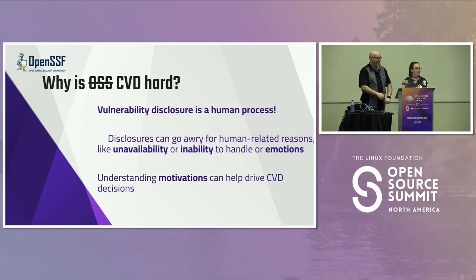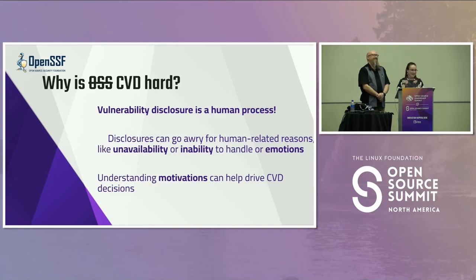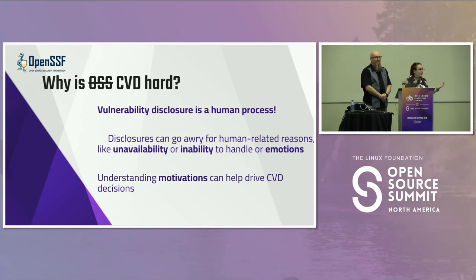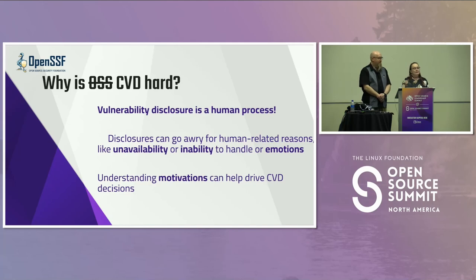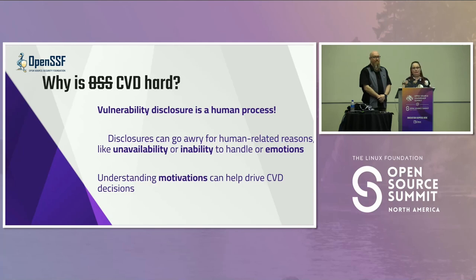I want to talk more generally about why coordinated vulnerability disclosure is difficult even beyond open source. I am a huge advocate of reminding folks that behind all the technology we interact with is a human being. Vulnerability disclosure is truly a human process — a person talking to another person. Disclosures can go awry for lots of human-related reasons like unavailability, inability, emotions, thoughts, and feelings. It's very important to remember the motivations of all parties involved and give people a little grace. Everyone typically involved in a CVD process is doing so for good, altruistic reasons. Showing some empathy and understanding — these things can take time. Remember that who you're talking to, for now at least, is still a human being.